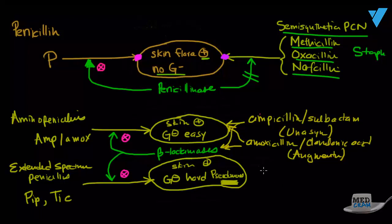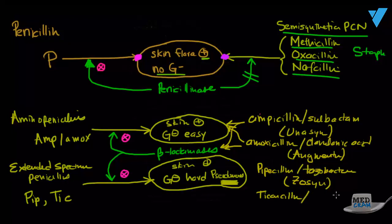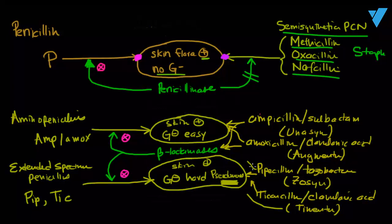Similarly, down here, we would take pipercillin and we would couple it with tazobactam and we would get a medication called Zosyn. And we could take ticarcillin and couple that with clavulonic acid and come up with the medication Timentin. And again, that would attack the bacteria like it normally would. And these would attack the beta-lactamase to prevent the beta-lactamase from eating the beta-lactam ring of the pipercillin or the tazobactam.